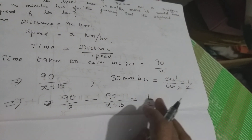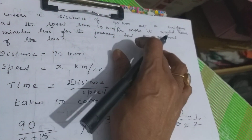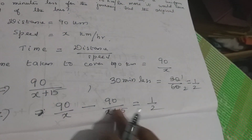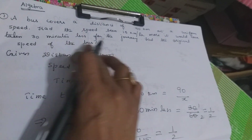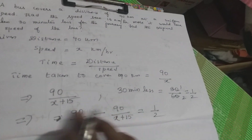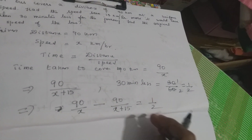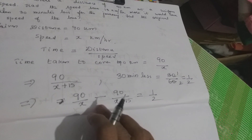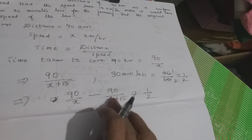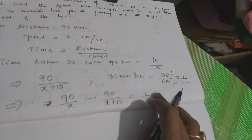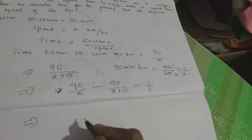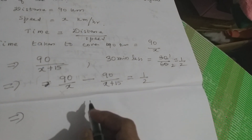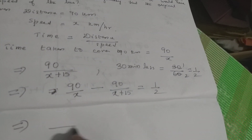When speed is increased by 15 km per hour, the equation is: 90 by x minus 90 by (x plus 15) equals half an hour. That means 90/x minus 90/(x+15) = 1/2. Now we have to simplify this. We know LCM — we can take both and simplify.